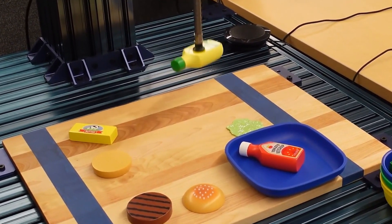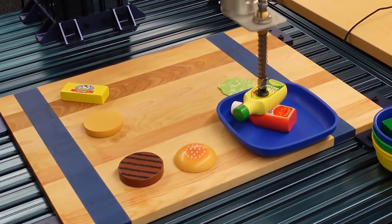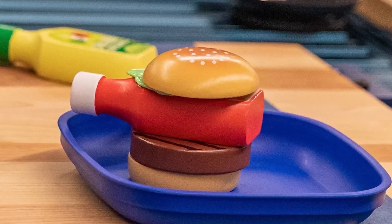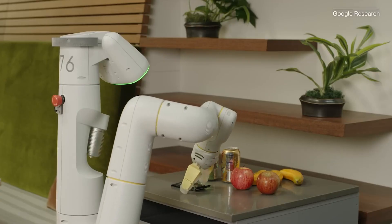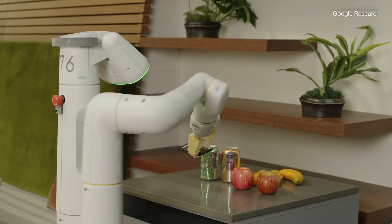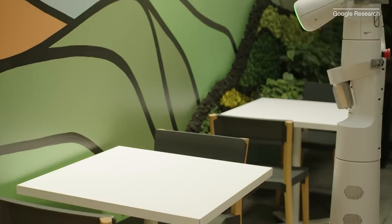They also made RT2 in a way that it could control a real robot. It does this by using a special string of numbers that tell the robot what to do. The scientists even used some ideas from an older version, RT1, and improved them to make this new one.